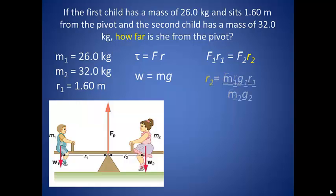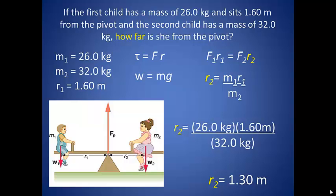So to solve for the distance, we can take the mass of the boy times his distance from the pivot times gravity, divided by gravity times the mass of the girl. So even better, we can get rid of the gravity expression since it is on both sides of our equation. From here, we can plug in our knowns and solve for a distance of 1.3 meters for the girl.